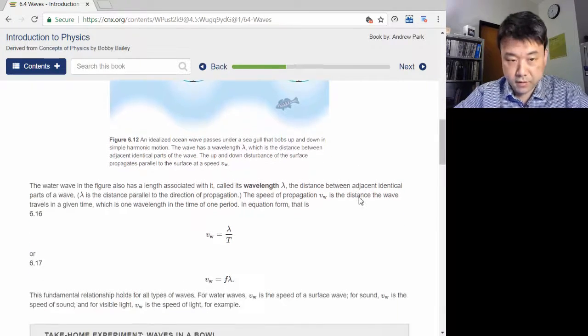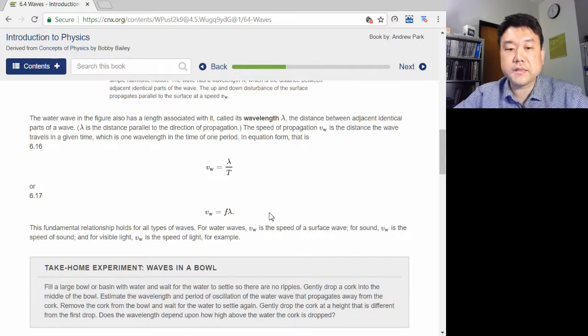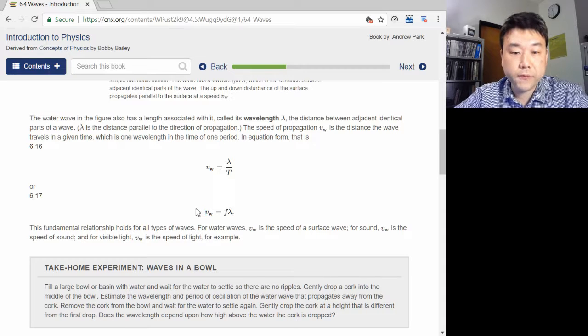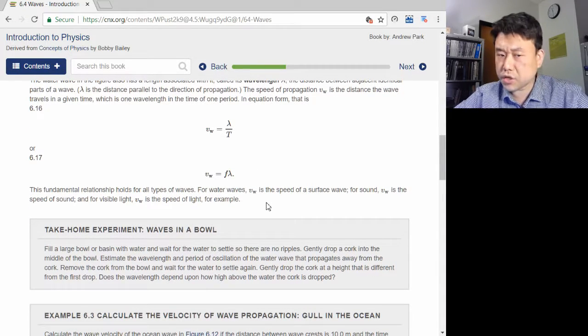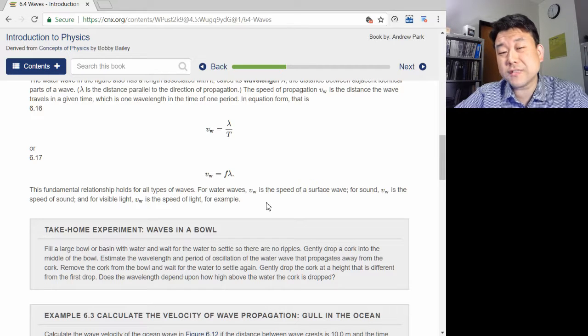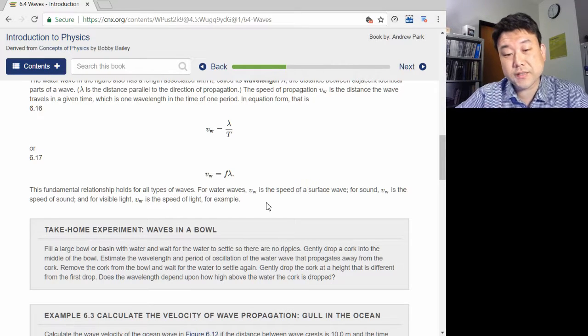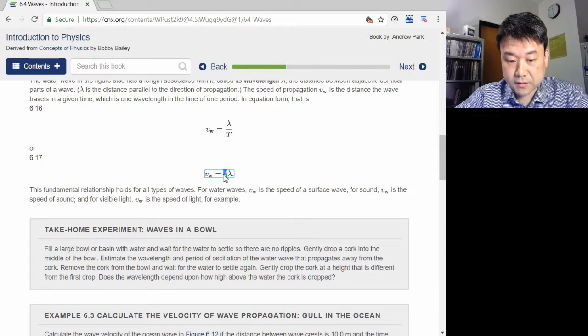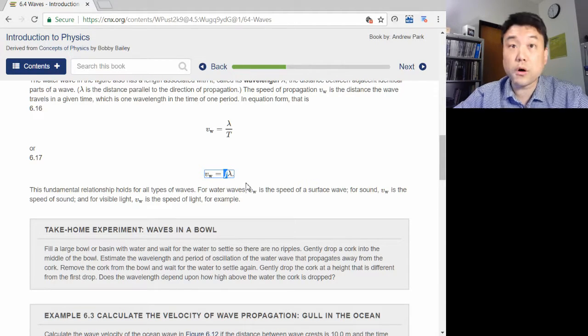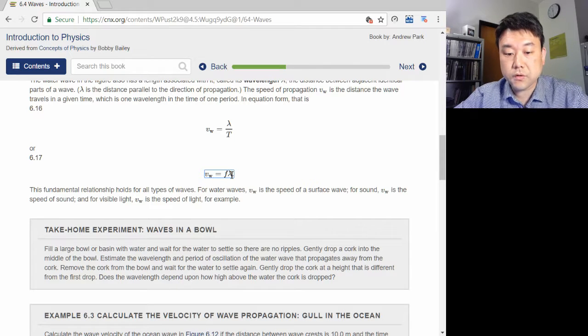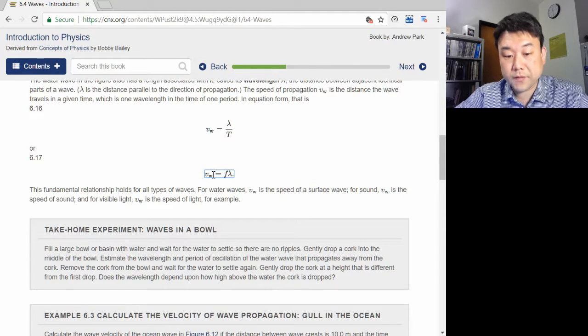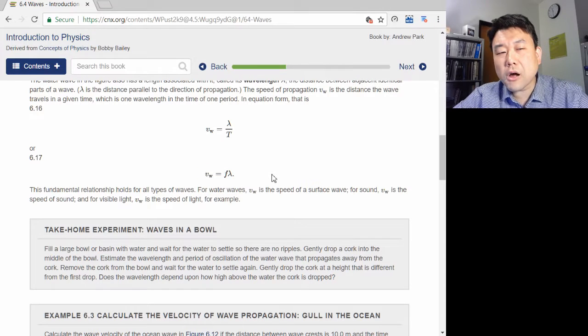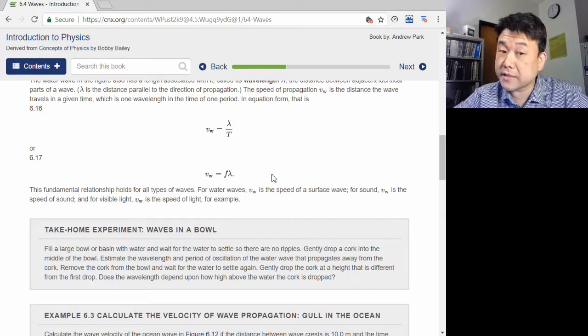One very general and useful feature is this relationship between wave speed, wavelength, and frequency. It is a very simple relationship. In fact, you can almost guess it by considering the units. Wavelength is in meters. Frequency is in hertz, or one over second. So multiplying them, you get wave speed in meters per second. This is also a very useful relationship, as you will see.